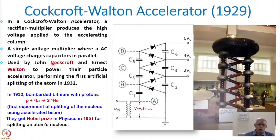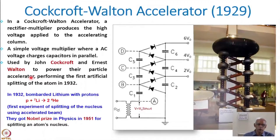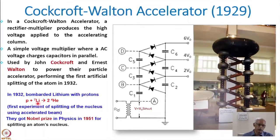Cockroft and Walton charged the capacitors by building a voltage multiplier, which was connected to a column section — the accelerating tube — and many experiments were done. These two scientists performed the first artificial splitting of the nucleus in 1932. They accelerated a proton beam to about 600 to 700 keV and bombarded lithium-7, finding it converts into two helium nuclei. This was the first experiment of splitting the nucleus using an accelerated beam.